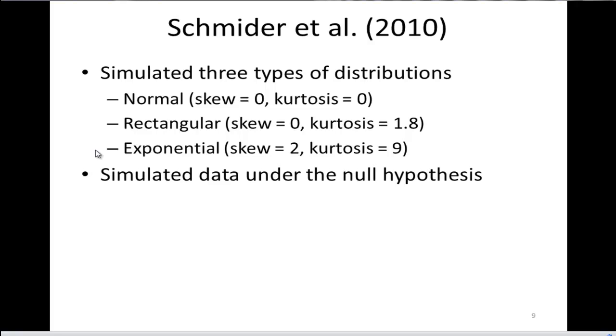They simulated data under the null hypothesis. Data were simulated so that there really were no differences between the means in the population. So when the t-test or the ANOVA is applied to these data, it should only find significant results in 5% of cases.